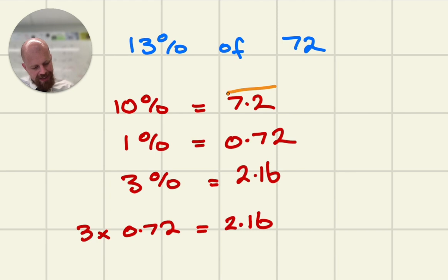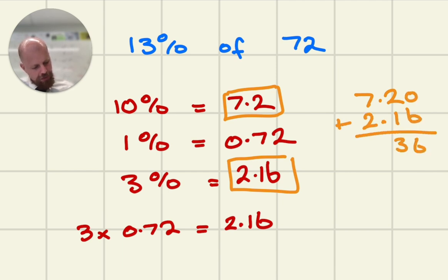Now, if I add 10% and 3% together, I do 7.2 plus 2.16, I get 9.36, which is 13% of 72.